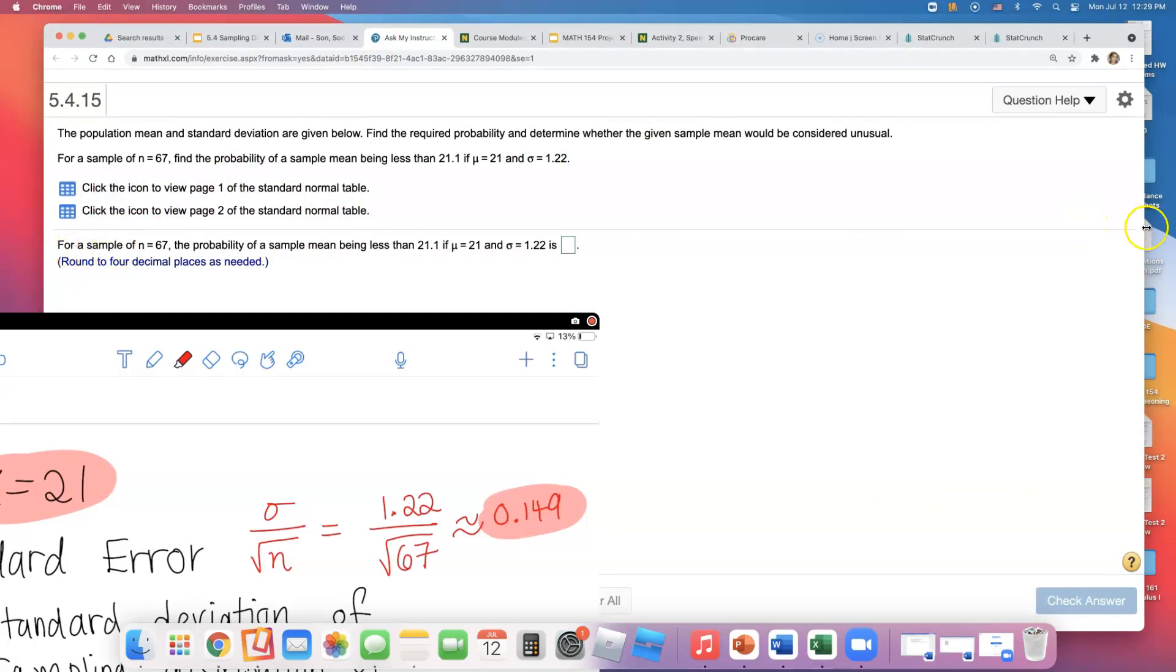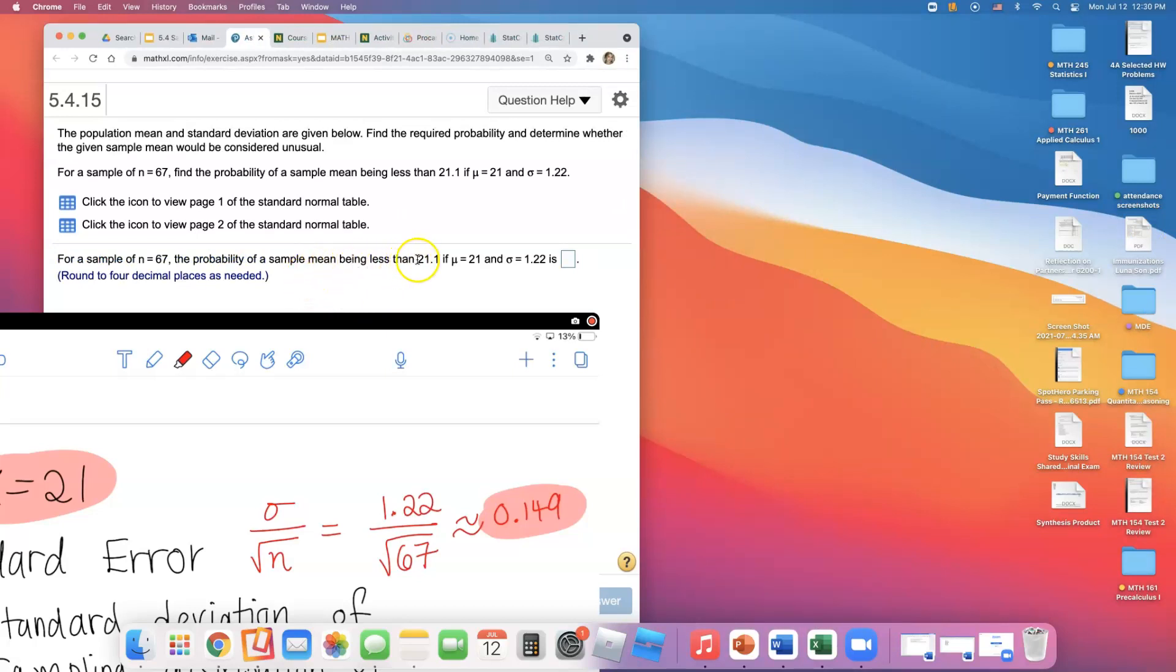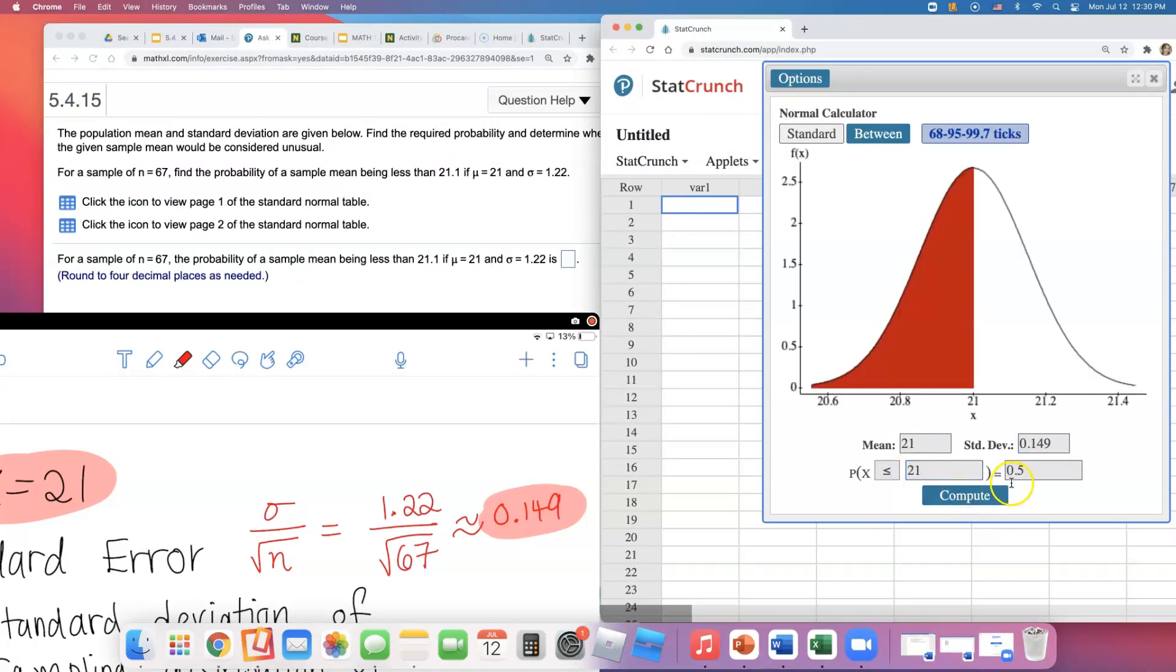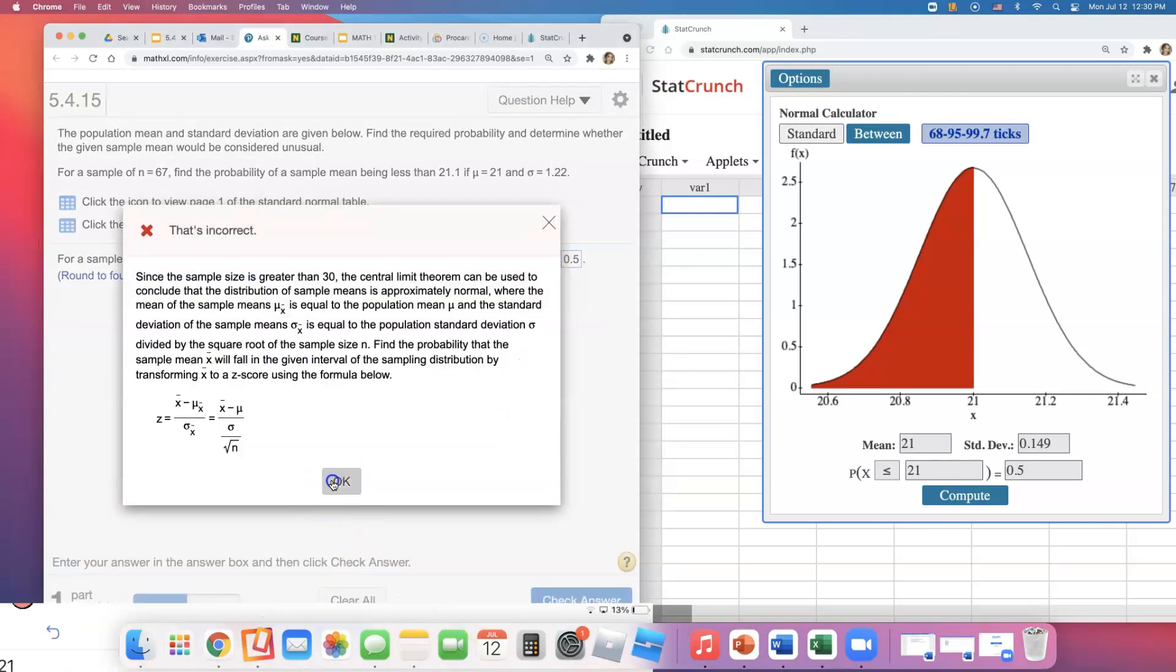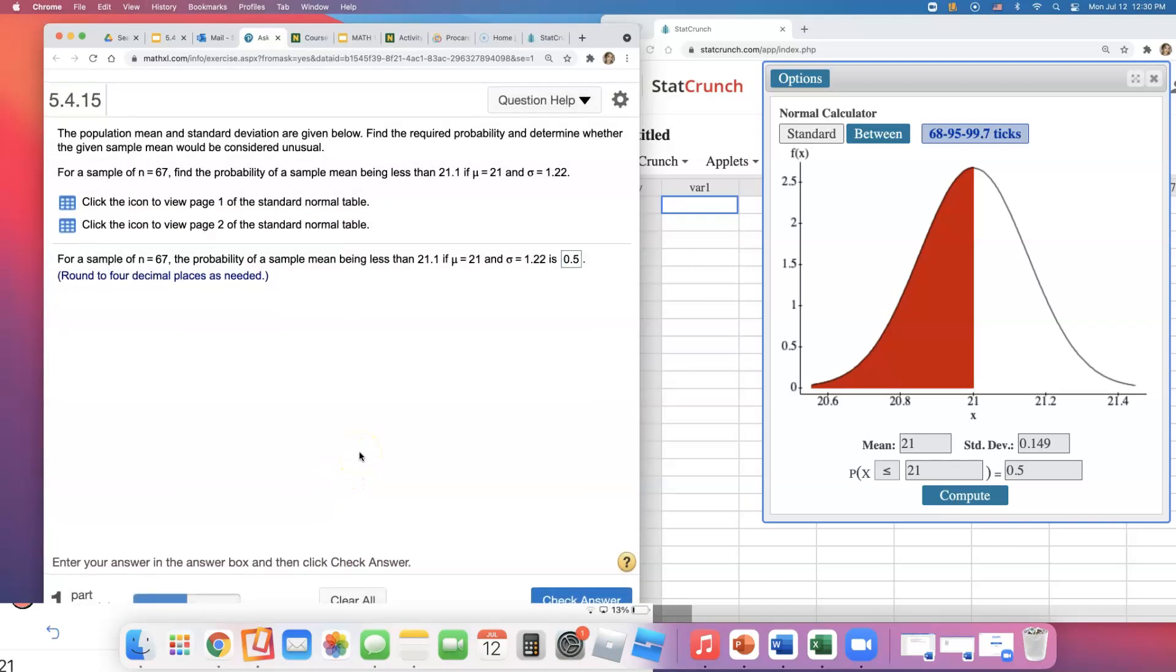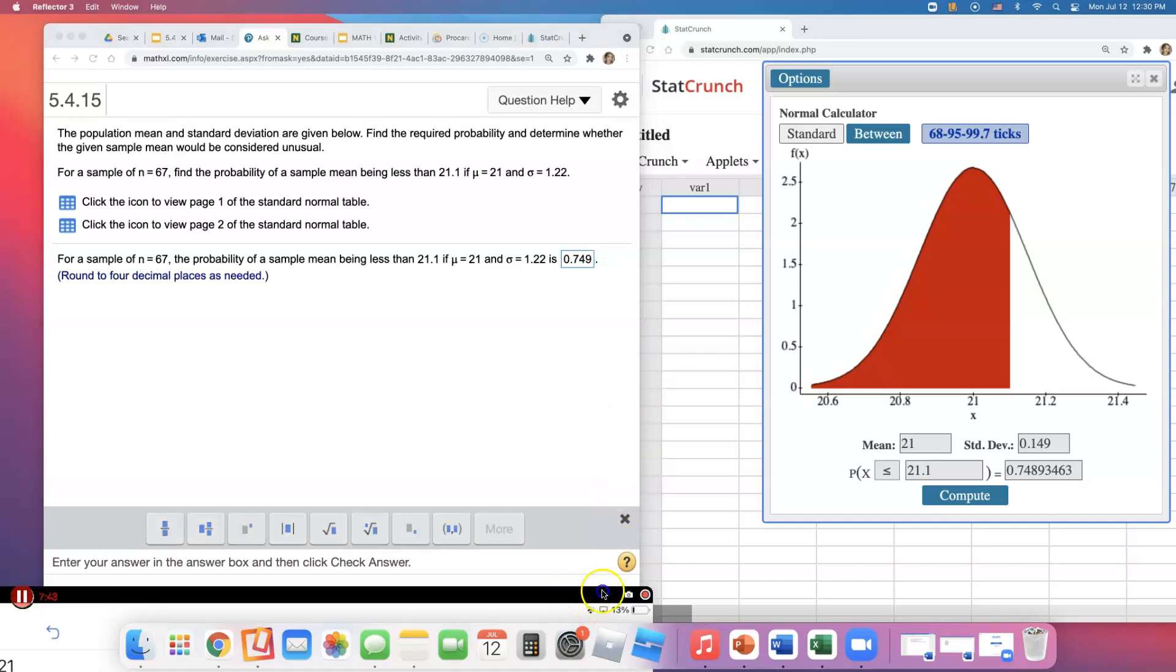What are we trying to find? For a sample of n equals 67, find the probability of a sample mean being less than 21.1. I didn't type the right number initially - it's 21.1, not 21. The probability rounds to 0.749.